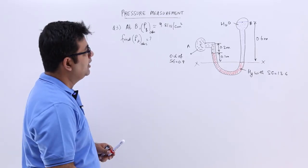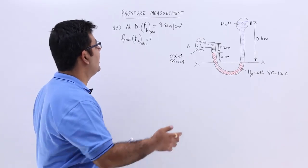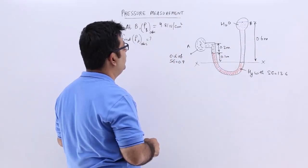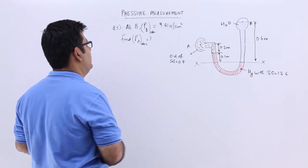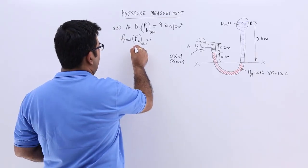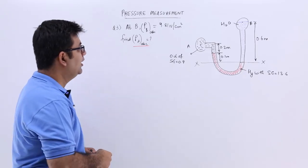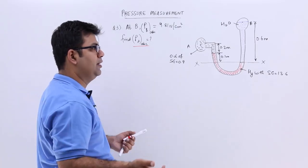The dimensions are given to you and it is also given to us that the absolute pressure at point B is 9.81 newtons per centimeter square. We have to find out the absolute pressure at point A. Let's start with the question. It's a very simple one.